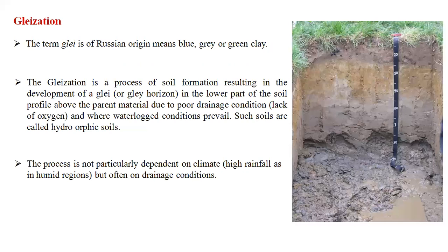The next process is gleization. In Russian, 'gley' means blue-gray or green clay. Gleization is a process of soil formation resulting in the development of a gley horizon in the lower part of the soil profile above the parent material, due to poor drainage conditions, lack of oxygen, and waterlogged conditions. These are called hydromorphic soils.